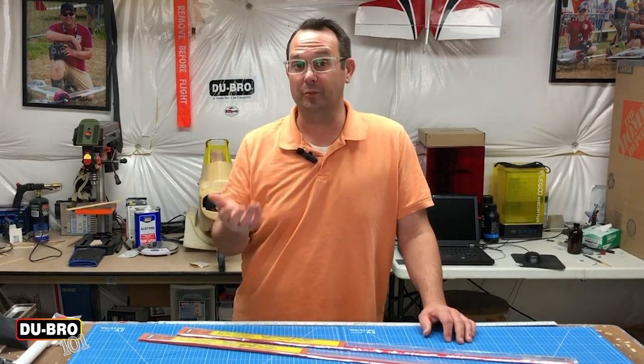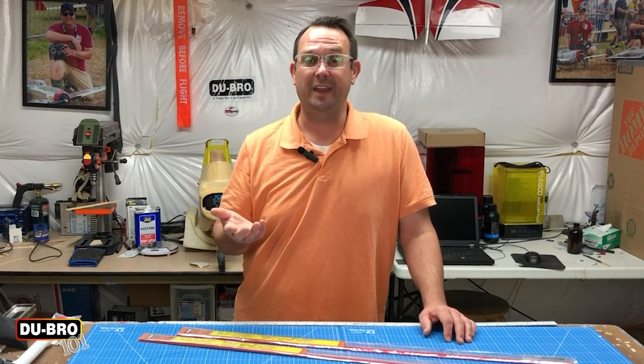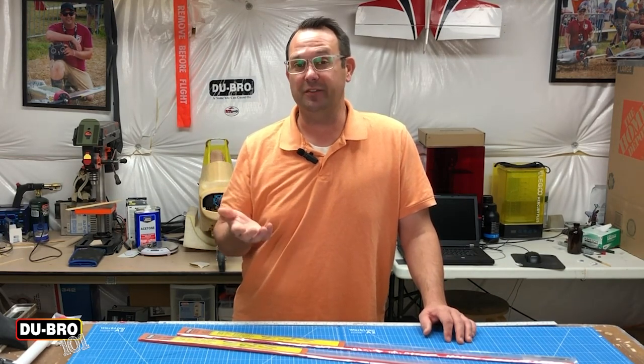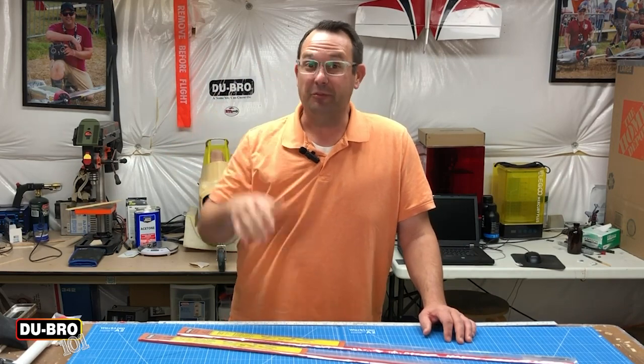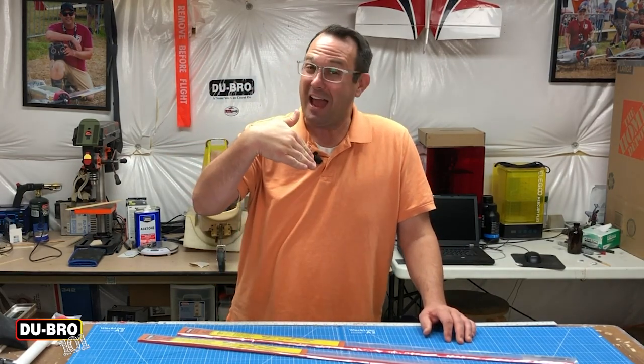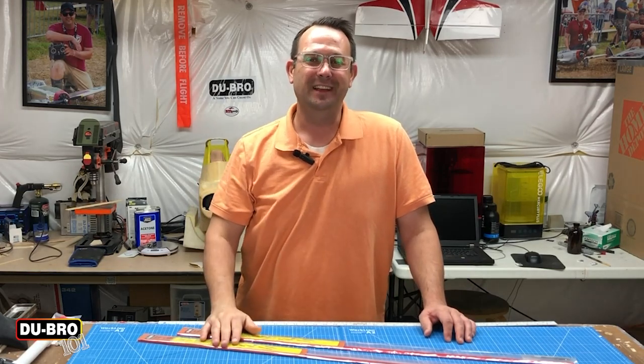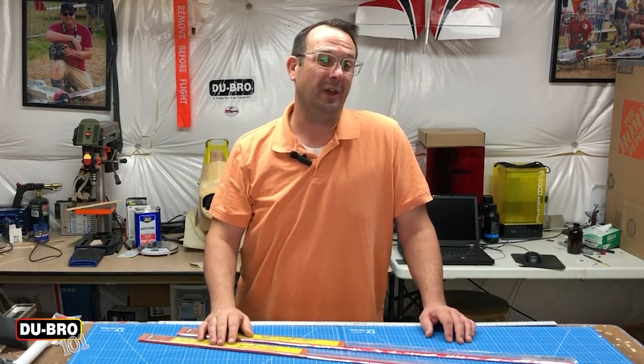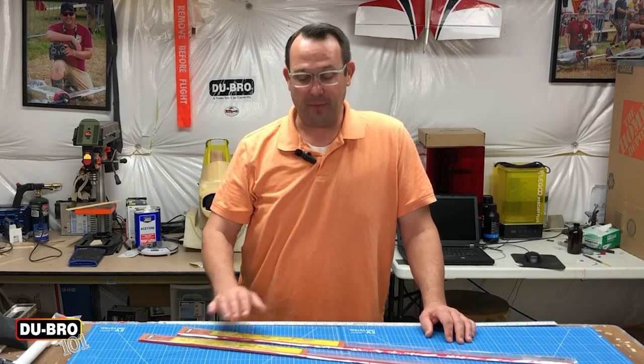For example, when you go out of a fuselage into a control surface like an elevator or rudder, you're going to want to have a little bit of extra stiffness there so that you don't have flex and some flutter. If you're in a high speed dive, you can have some flutter and then you have trouble controlling your model.